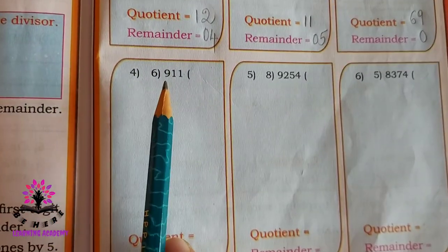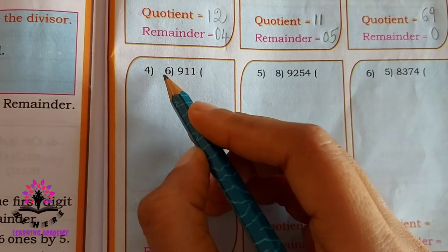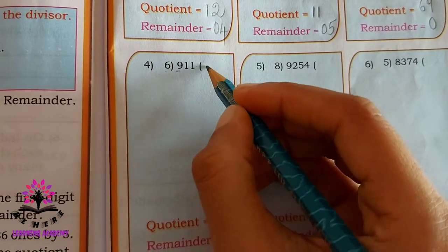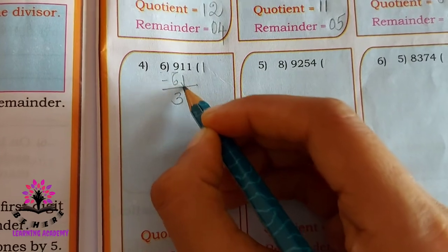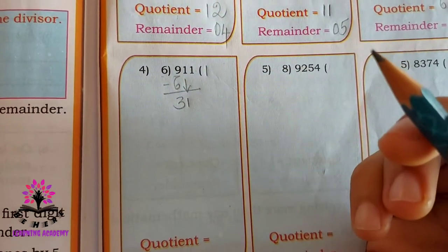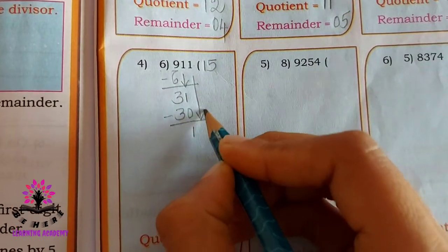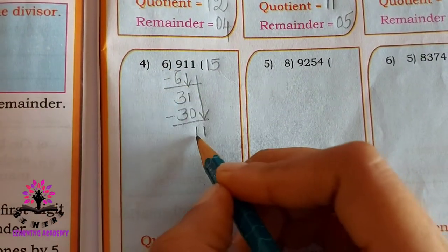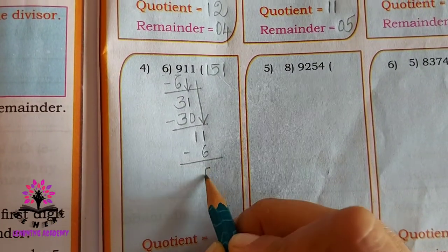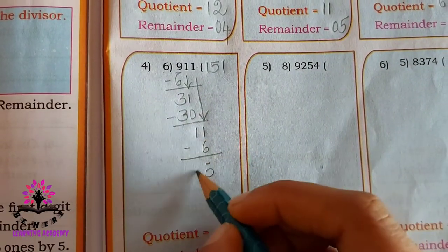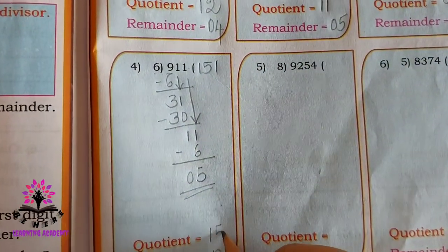See the next problem: 911 divided by 6. Six — how much is nine? Six ones are six. Subtract — answer is 3. Bring 1 down: six — how much is 30? Six fives are 30, so the remainder is 1. Bring the remaining 1 down: six — how much is 11? Six ones are six. Subtract — you get 5 as the answer. So the remainder is 5 and the quotient is 151.